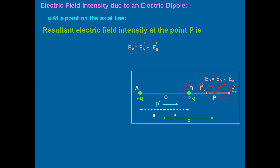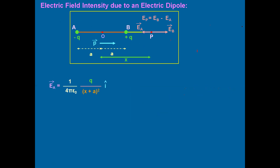Let us find the values of EB and EA. Recalling the electric field due to a point charge: E = (1/4πε₀) × Q/r². So EA = (1/4πε₀) × Q/(x+a)², since the distance from A to P is AO + OP = x + a. And EB = (1/4πε₀) × Q/(x−a)², since the distance BP = x − a.